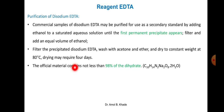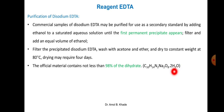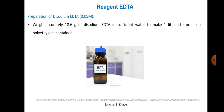The official material of disodium EDTA contains not less than 98% of the dihydrate — it is a hydrated salt with two water molecules. This is the procedure for purifying the disodium EDTA which is widely used as a complexing agent in most complexometric titrations.